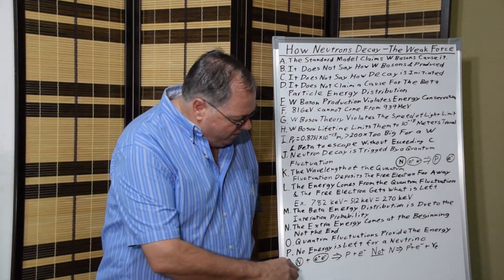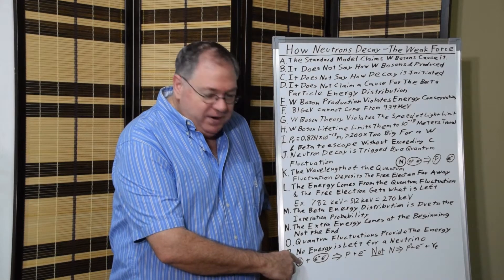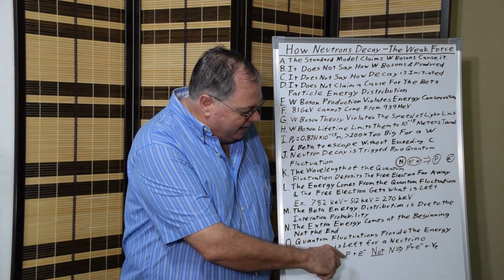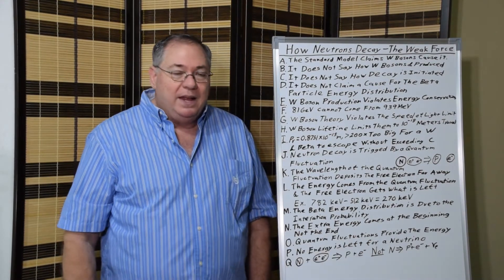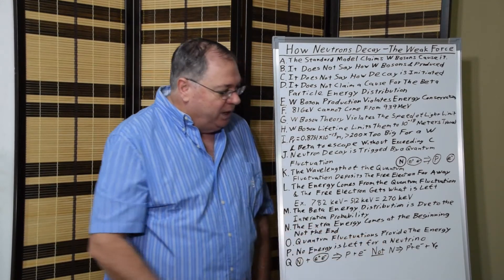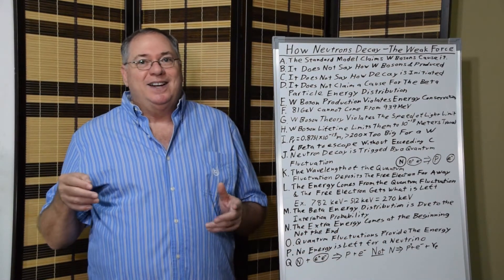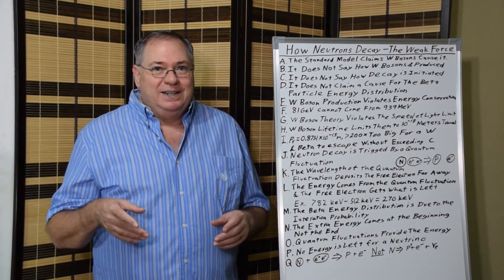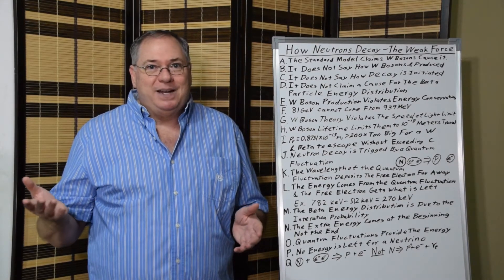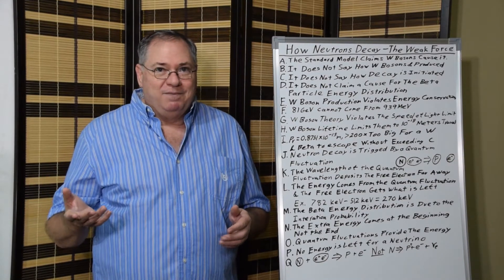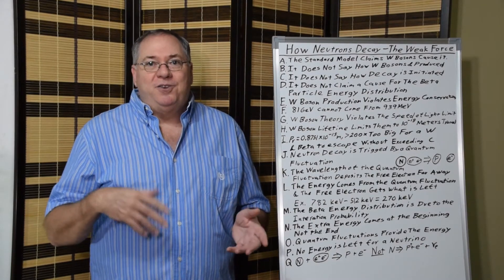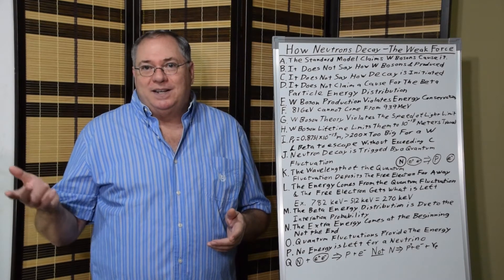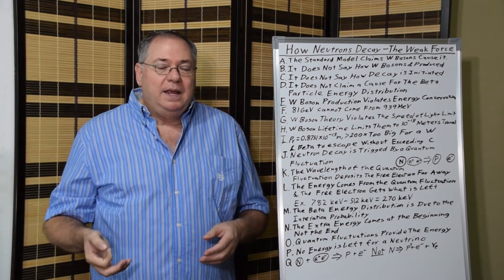So, we have an equation here where you have a neutron that comes in contact with the quantum fluctuation and you get a proton-electron. You don't have a case where a neutron spontaneously decays on its own, spontaneously forming a W-boson, and then the W-boson magically jumps outside the proton, violating the speed of light limit, causing the neutron to decay to a proton, and the W-boson decays to an electron.